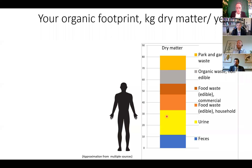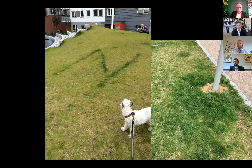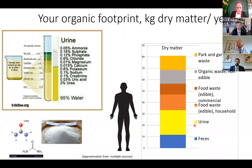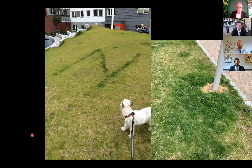If we look at it in terms of dry matter, it's quite evenly distributed between feces, urine, various types of food waste, and park and garden waste. Most garden waste is never collected. You produce 20 kilos of dry urine every year, almost half of which is urea — an organic nitrogen-containing compound, white and crystalline. The yellow color comes from another compound called urobilin.